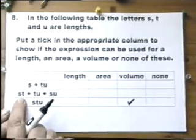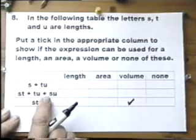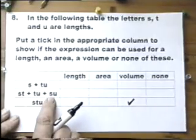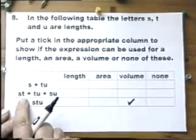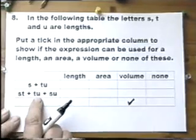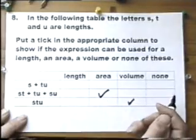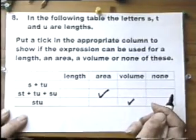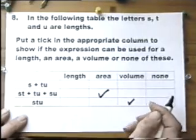A length times a length is an area, or one dimension times one dimension is two dimensional, which is an area. So in fact, we've got in this expression an area added to an area added to an area, which is just a bigger area.